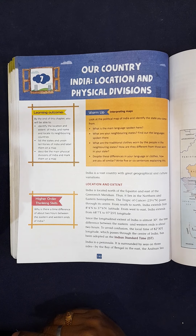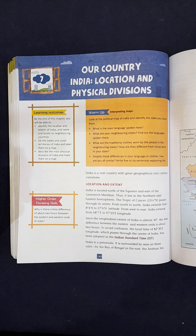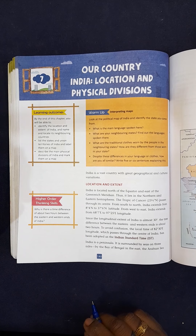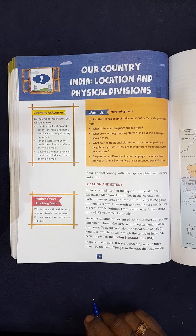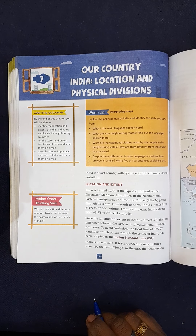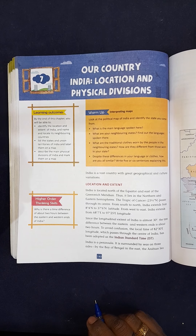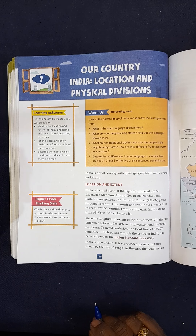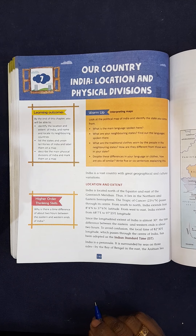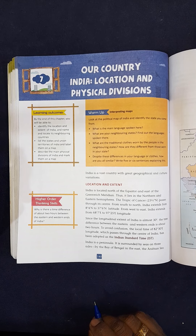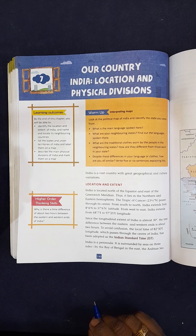Good morning everyone. Today we are going to study the geography chapter 7 - our country India: location and physical division. We know India is a vast country with great geographical and cultural variation.